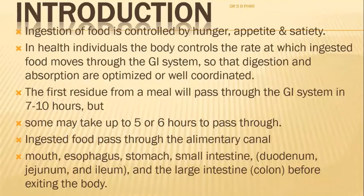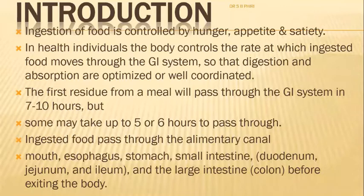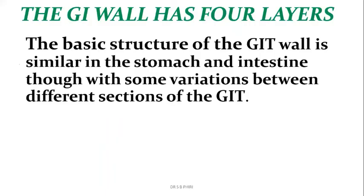The ingested food passes through the alimentary canal: the mouth, esophagus, stomach, small intestine - which includes the duodenum, jejunum, and ileum - then the large intestine or colon, with the ascending, transverse, and descending colon, followed by the sigmoid colon connecting to the rectum, and finally the anus.